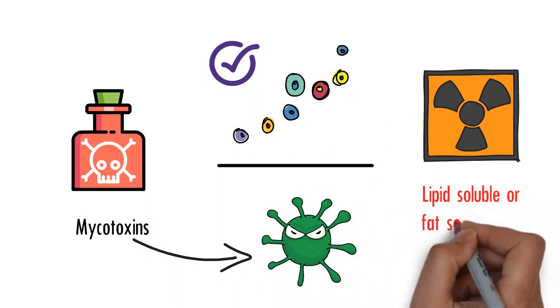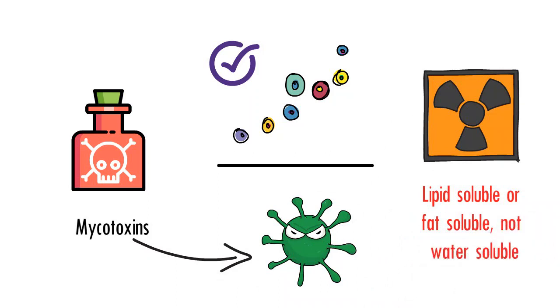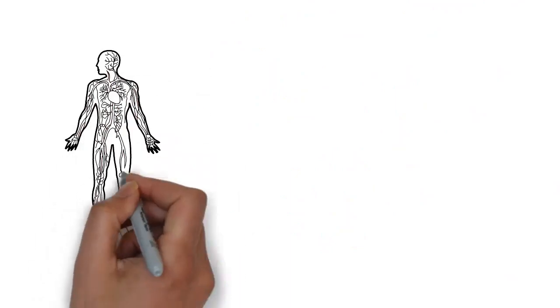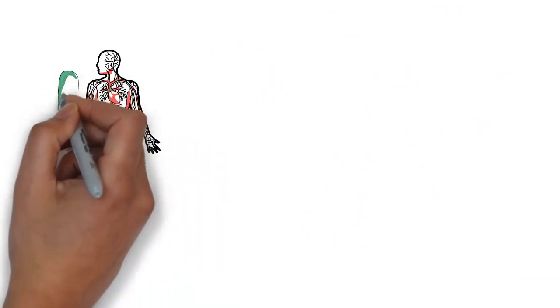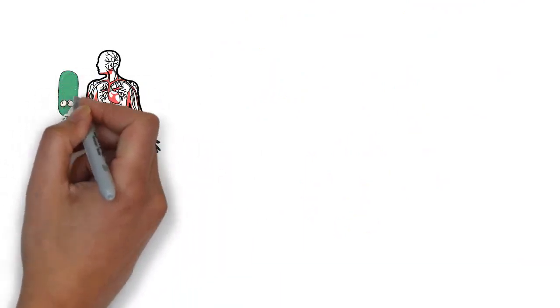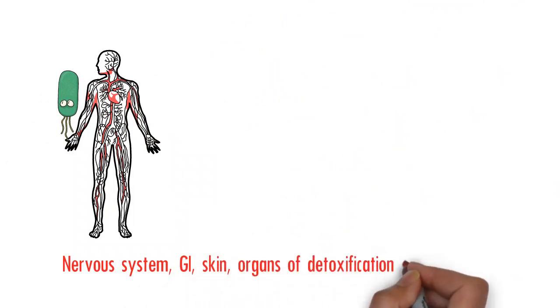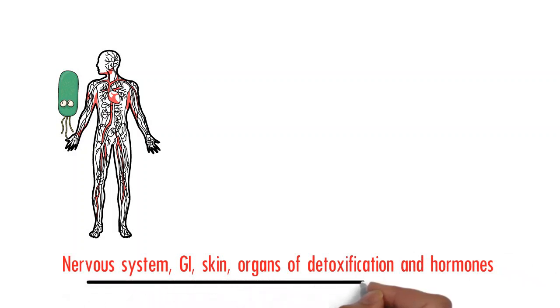The other thing about these toxins that makes them very poisonous is that they're lipid soluble or fat soluble, not water soluble, and what that means is that they can absorb into the body really quickly and they stay. So you can accumulate them, and the areas that they tend to absorb into are nervous system, GI, skin, organs of detoxification, and hormones. You can imagine now with that broad list that I just gave, that means there could be lots and lots of different symptoms.